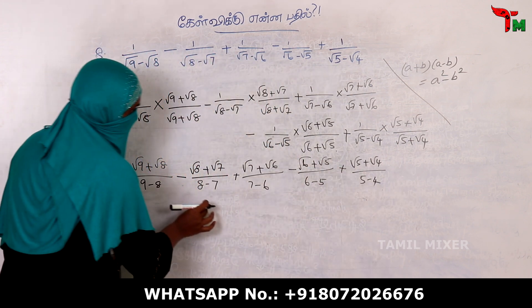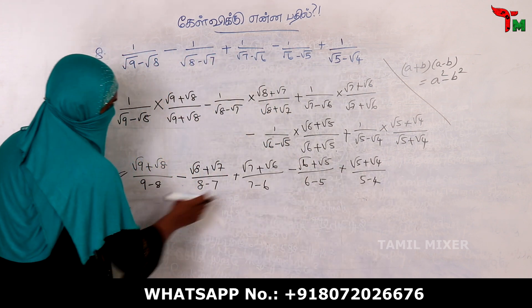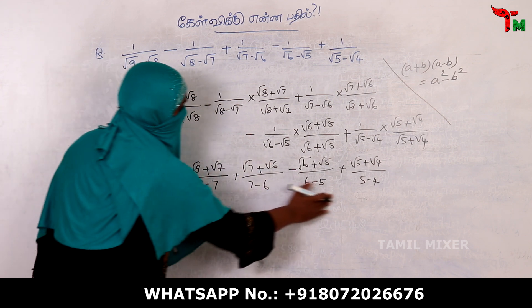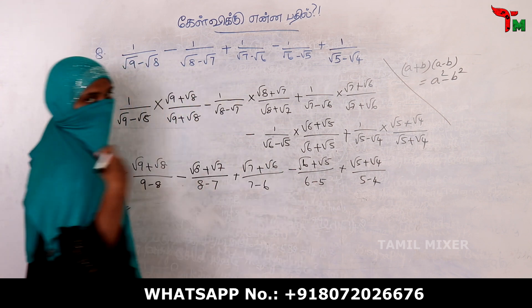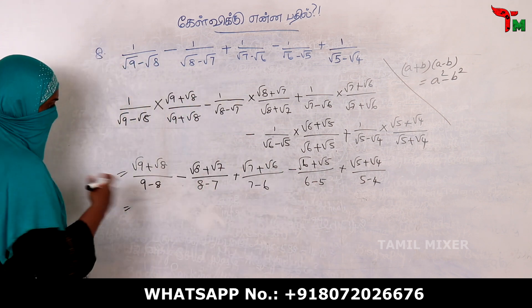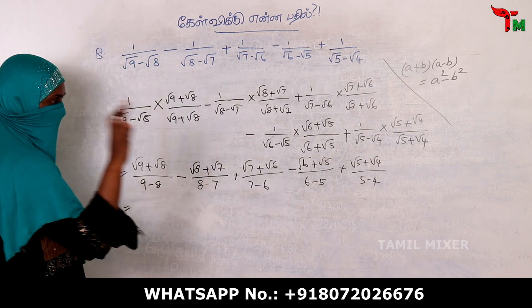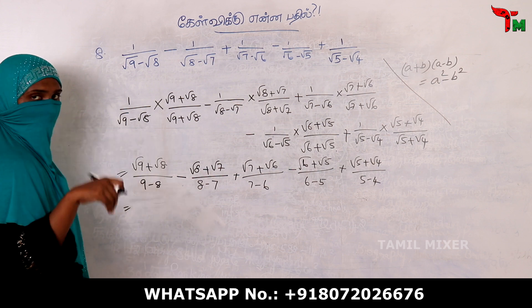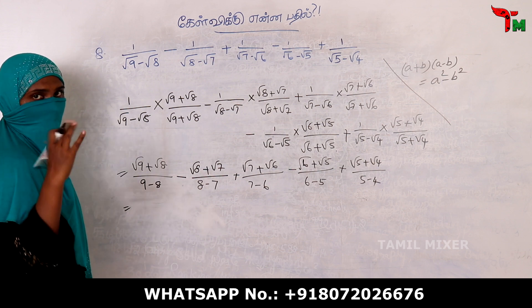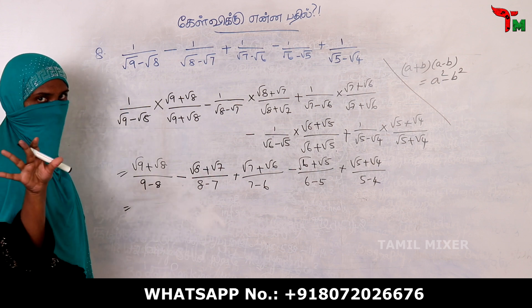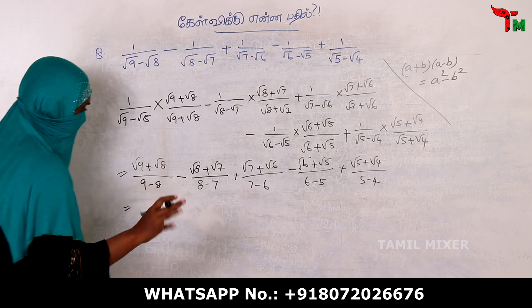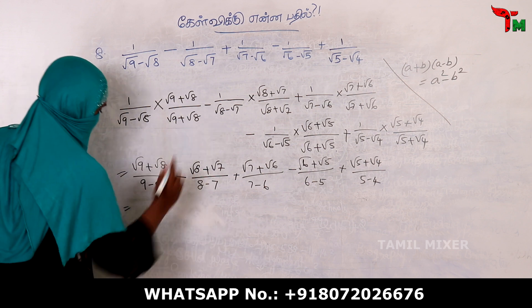At this step, all of the denominators become 1. The denominator of every term is 1, so we are left with just the numerators.